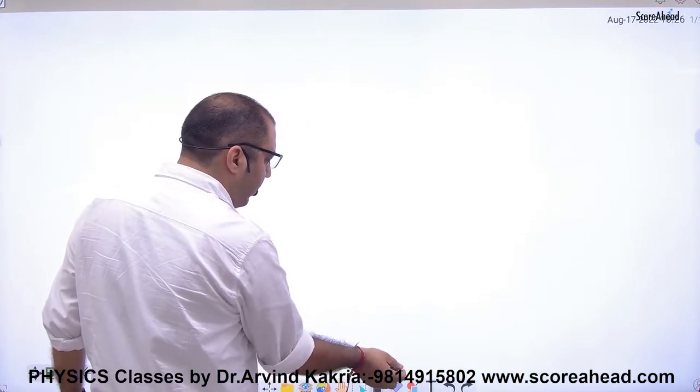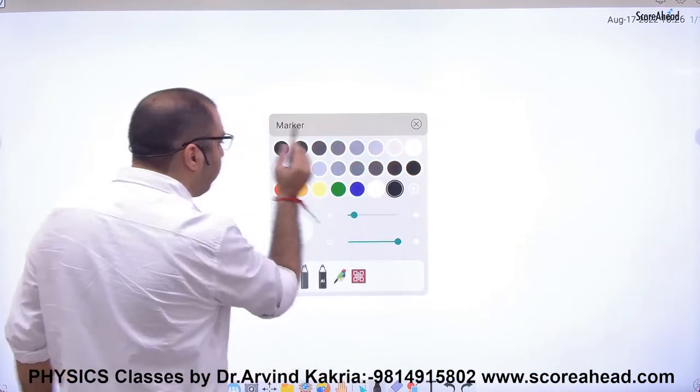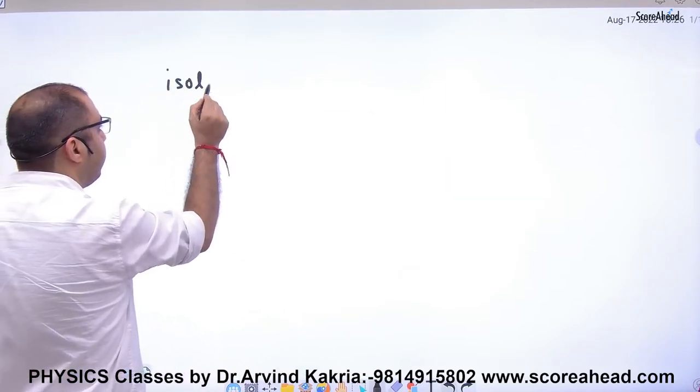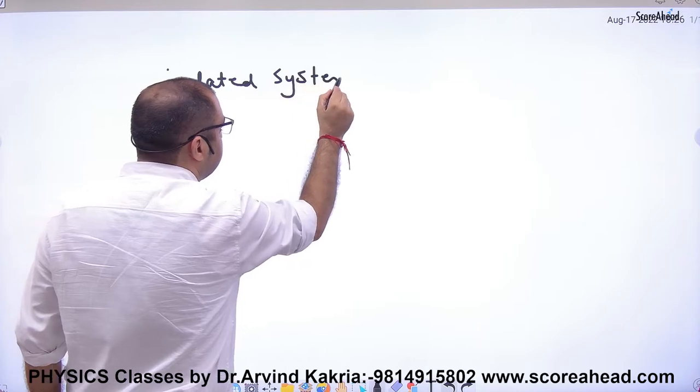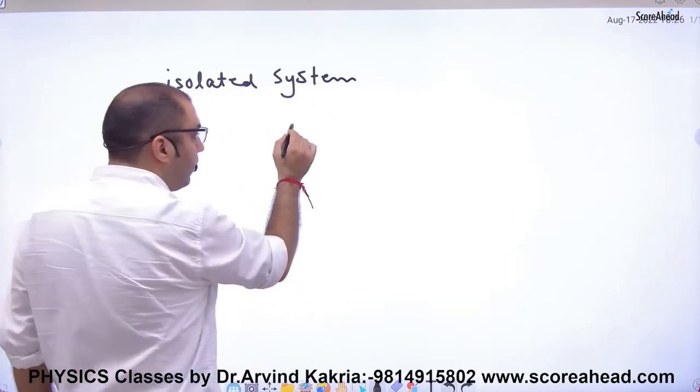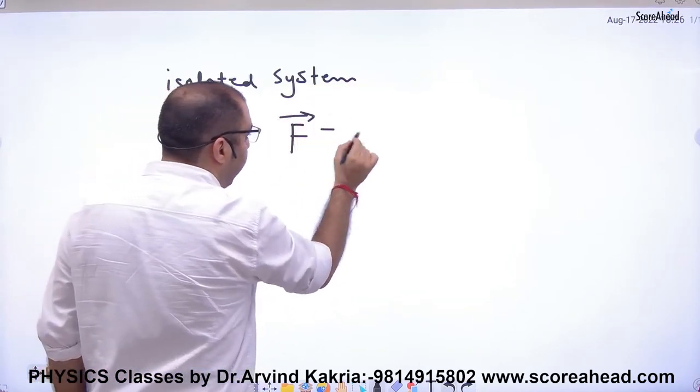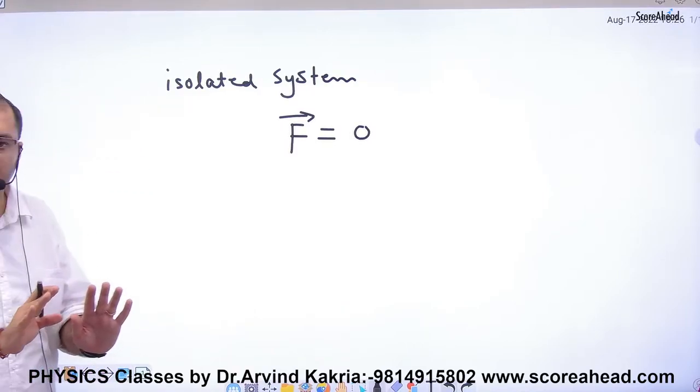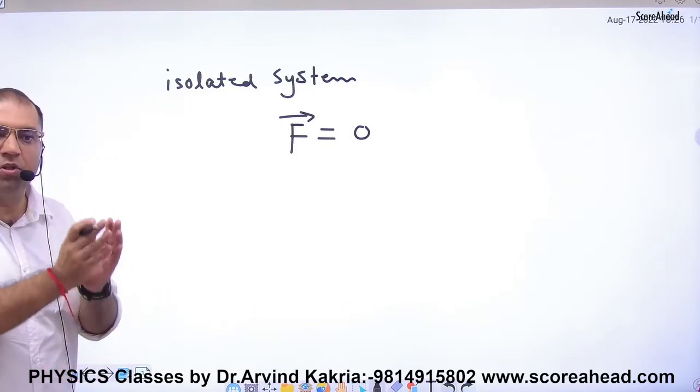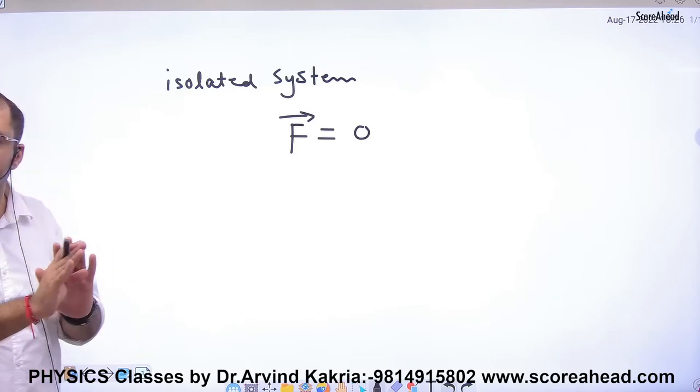Now the story of isolated system is like this: if your system is an isolated system, any example I took, all the examples I took were isolated system. So suppose I took an isolated system. On an isolated system, net force is zero. This is the rule. So isolated system is that system on which net external force is zero.